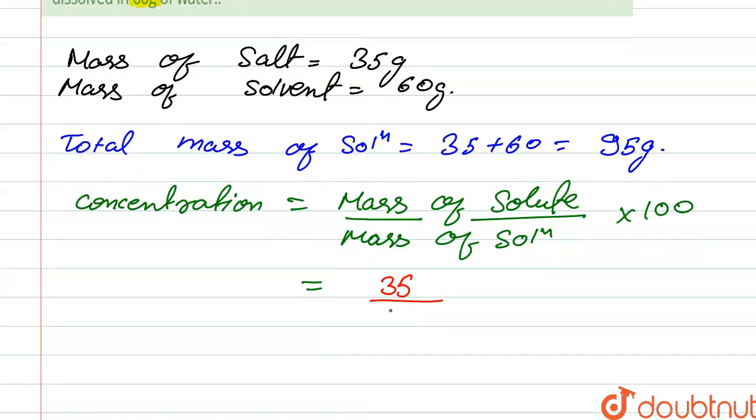mass of solution, that is 95 grams, times 100, which gives us 36.84 percent. So this is the concentration of solution. Thank you.